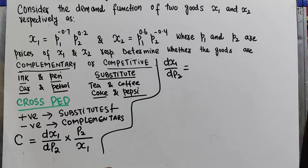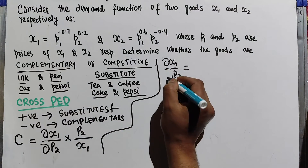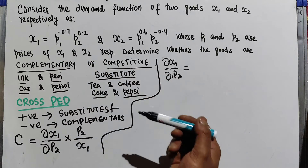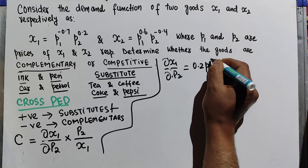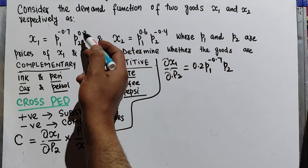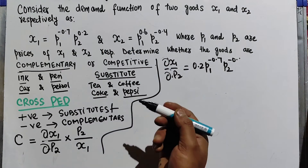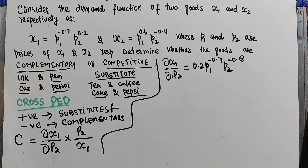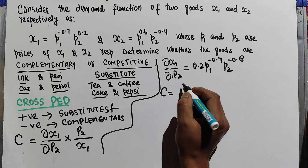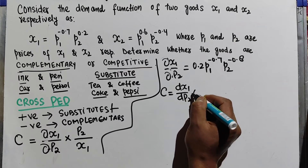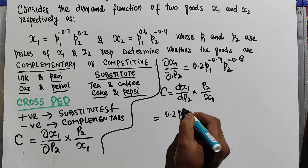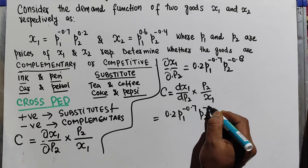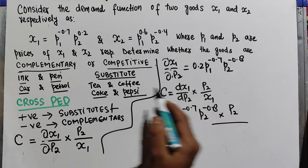Taking the partial derivative of the demand function for x1 with respect to p2: the exponent of p2 becomes the coefficient, giving us 0.2 times p1 raised to the power minus 0.7, and p2's exponent is reduced by 1, becoming minus 0.8. So dx1/dp2 equals 0.2 times p1 to the power minus 0.7 times p2 to the power minus 0.8.